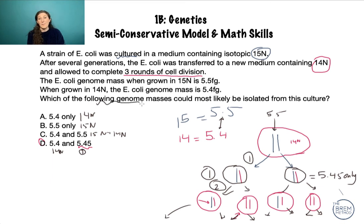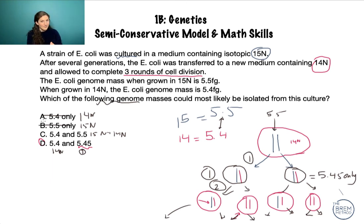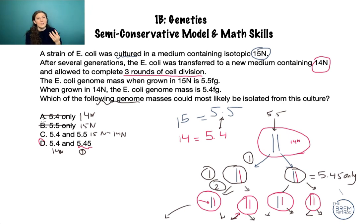We're not asked about relative amounts — just whether it's possible to find a given mass. So the answer is D: 5.4 and 5.45. On test day I would have quickly eliminated A and B, because we know there's going to be a mixture — it's not going to be only 14N and only 15N — because with the semi-conservative model we conserve some of the original while bringing in the new. If the concept of genome mass and isotopes is confusing, just draw this out. Trust that your knowledge of the semi-conservative model will inform you about this new setup. There's no new content here, just a new presentation.